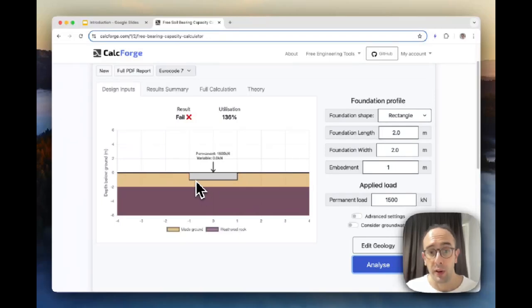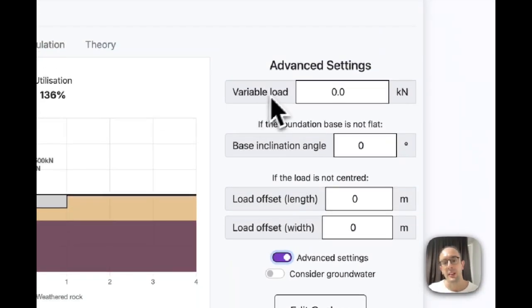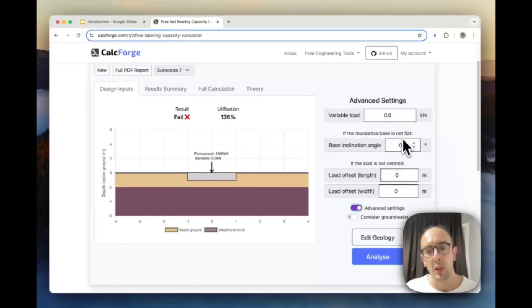And what you'll see here now is it's failing. So this force which I want to apply, the ground below the foundation isn't strong enough basically to sustain this. And you see here it's 136% utilized, so it's 36% over the limit if you imagine 100% is the limit in which it goes from pass to fail.